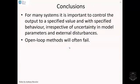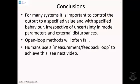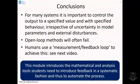Conclusions. For many systems, it's important to control the output to a specified value and with specified behaviour, irrespective of uncertainty in the model parameters and external disturbances. And open-loop methods will often fail. Now, humans use a concept called measurement feedback loop to achieve this and we'll cover that in the next video. And this module then will introduce the mathematical and analysis tools that students need to introduce feedback in a systematic fashion and thus to automate the process.